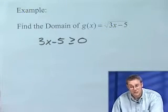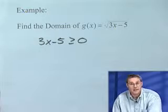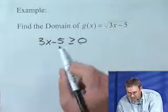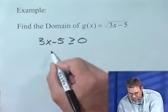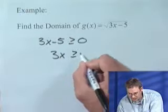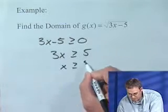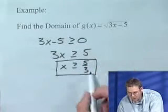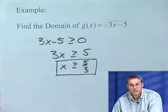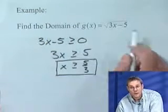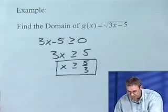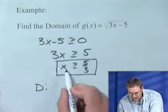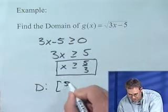If it's less than 0, we can't have it. We have to throw it away. So let's try to figure out when is 3x minus 5 greater than or equal to 0. We're going to solve this inequality. And that tells us that when x is greater than or equal to 5/3, I'm going to get something that's 0 or greater inside the square root. So what's the domain? Well, the domain is all values greater than or equal to 5/3.